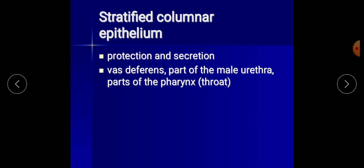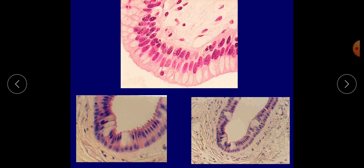Stratified columnar epithelium functions in protection and secretion. It is found in the male urethra and part of the pharynx. The basal layer usually consists of short, irregular-shaped cells, and only the apical layers have columnar cells. It lines part of the urethra, large excretory ducts of some glands such as esophageal glands, small areas in the anal mucous membrane, and part of the conjunctiva of the eye.